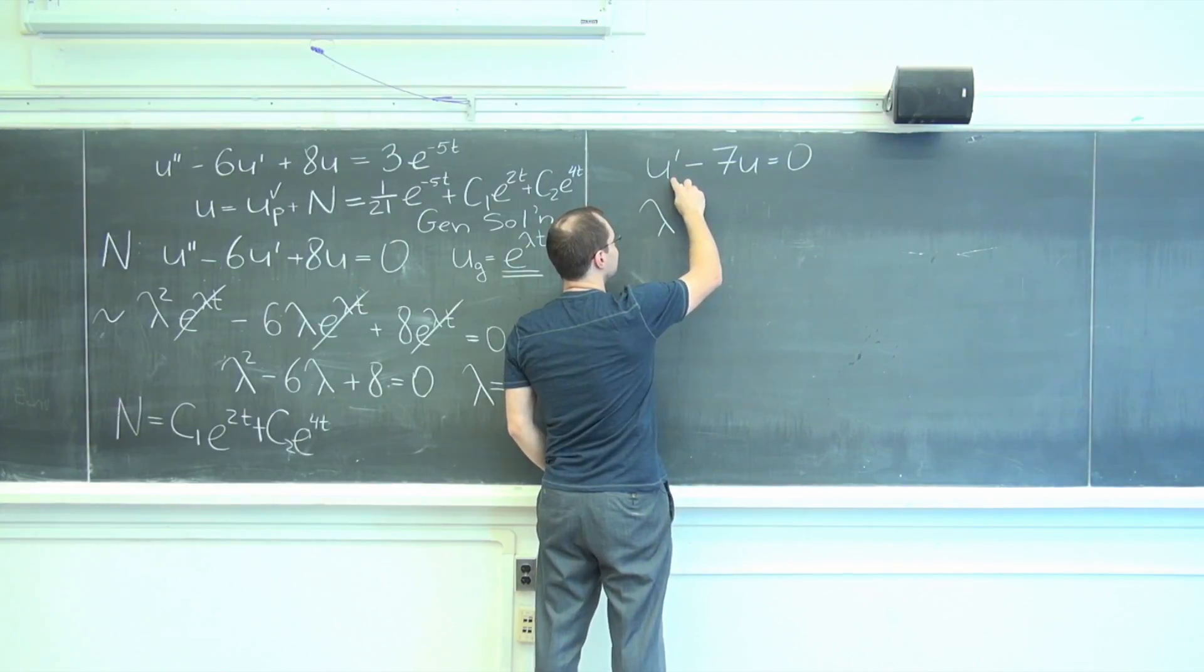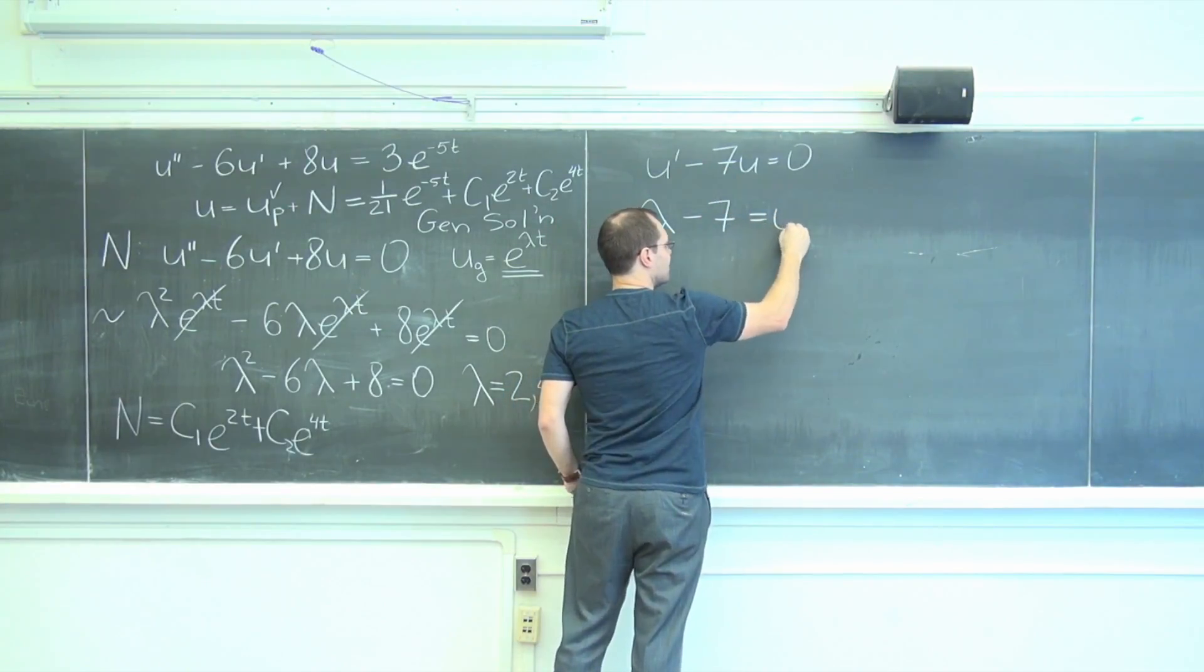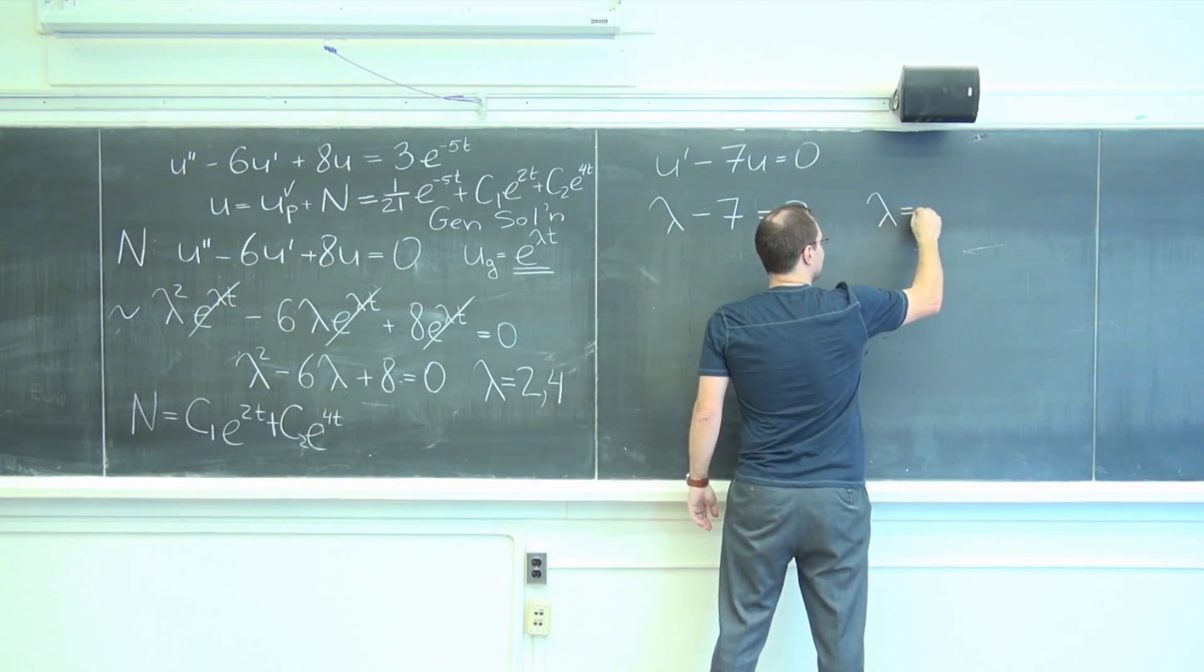So when I plug in e to lambda t into this equation, I just get lambda minus seven equals zero. Lambda equals seven.